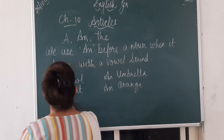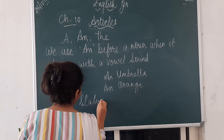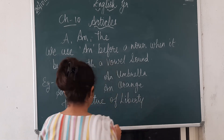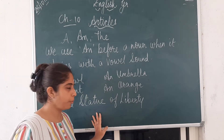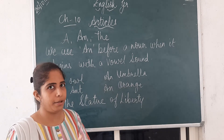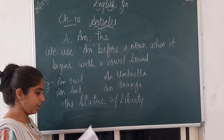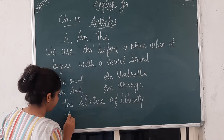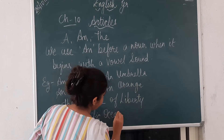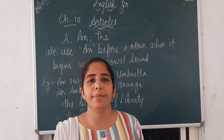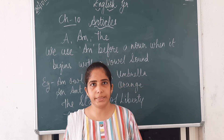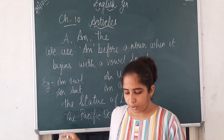See the examples: the Statue of Liberty. This is the one in the world — it is a famous, unique noun. It is a building which is the one in the world, so if we talk about it, we use THE. The Pacific Ocean — this is the name of an ocean, and this is why we use THE Pacific Ocean.